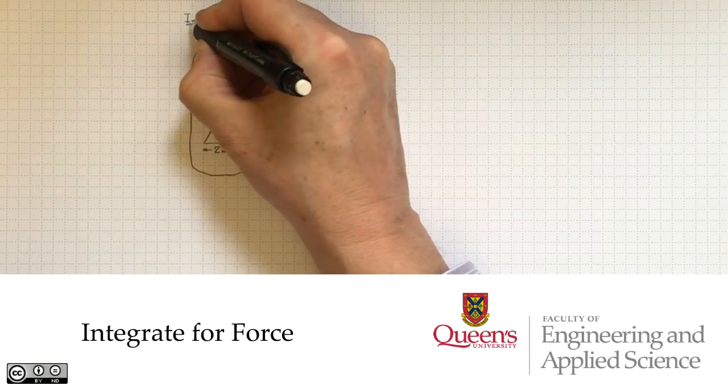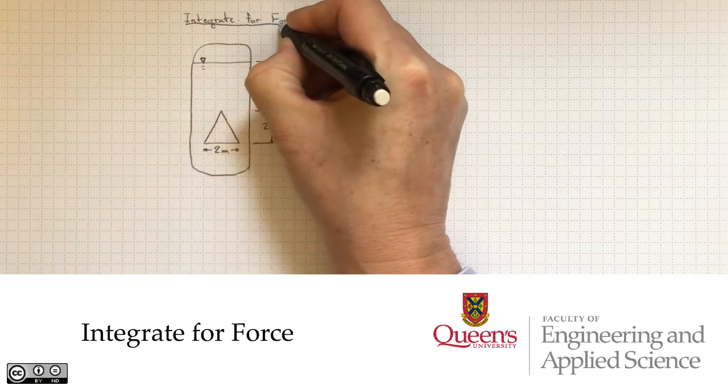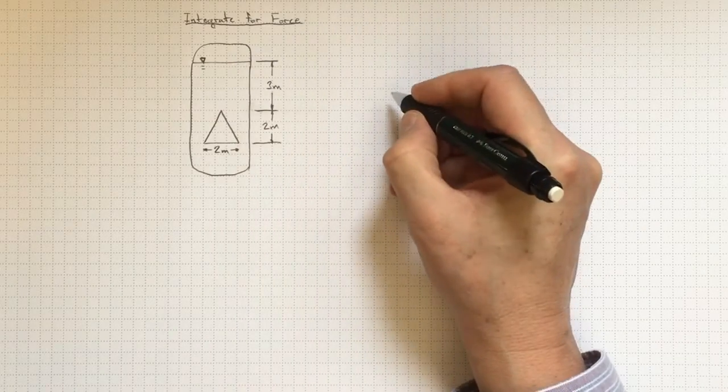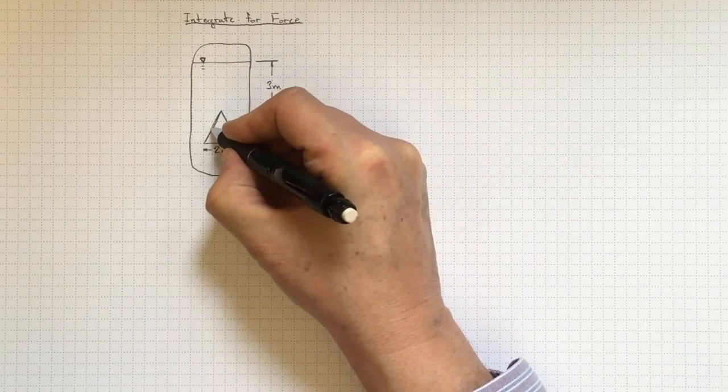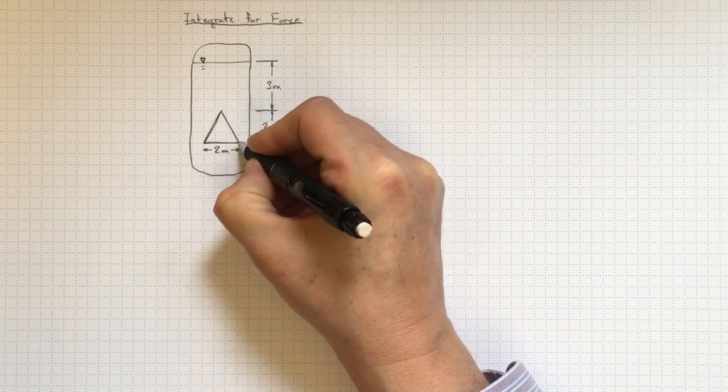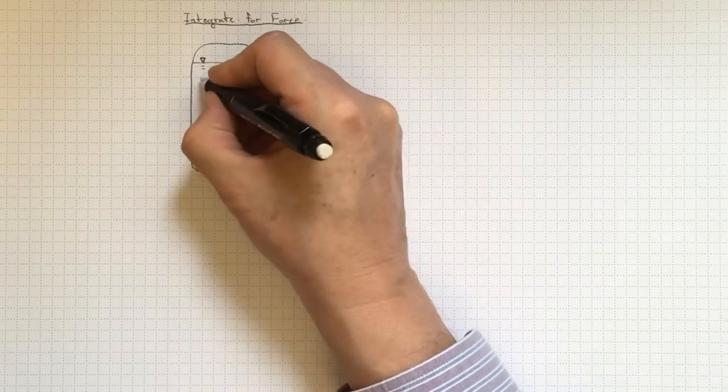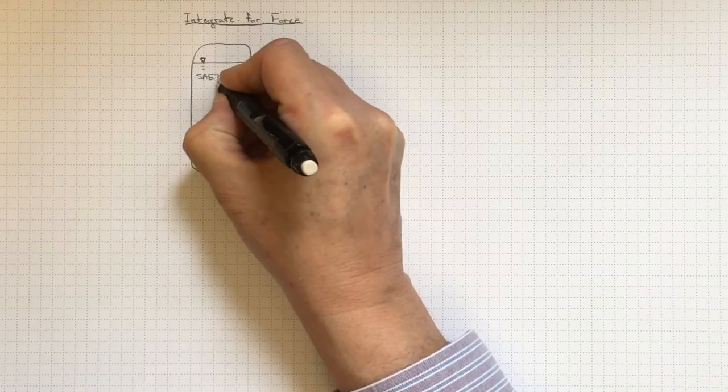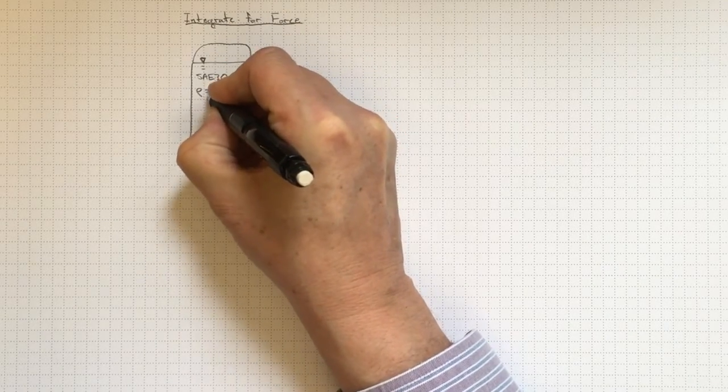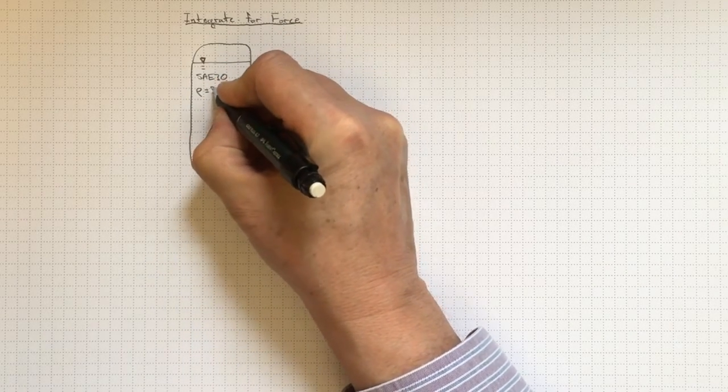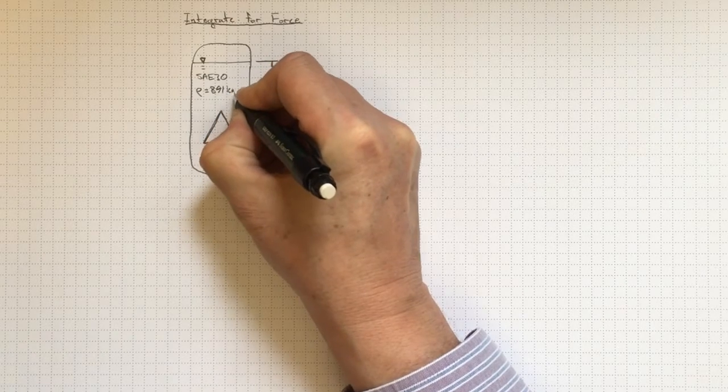Here's an example that will allow us to integrate the pressure in order to get the force acting on a surface. In this instance, we've got a triangular hatch on this tank. And the tank is full of SAE-30 oil. And that oil has a density of 891 kilograms per cubic meter.